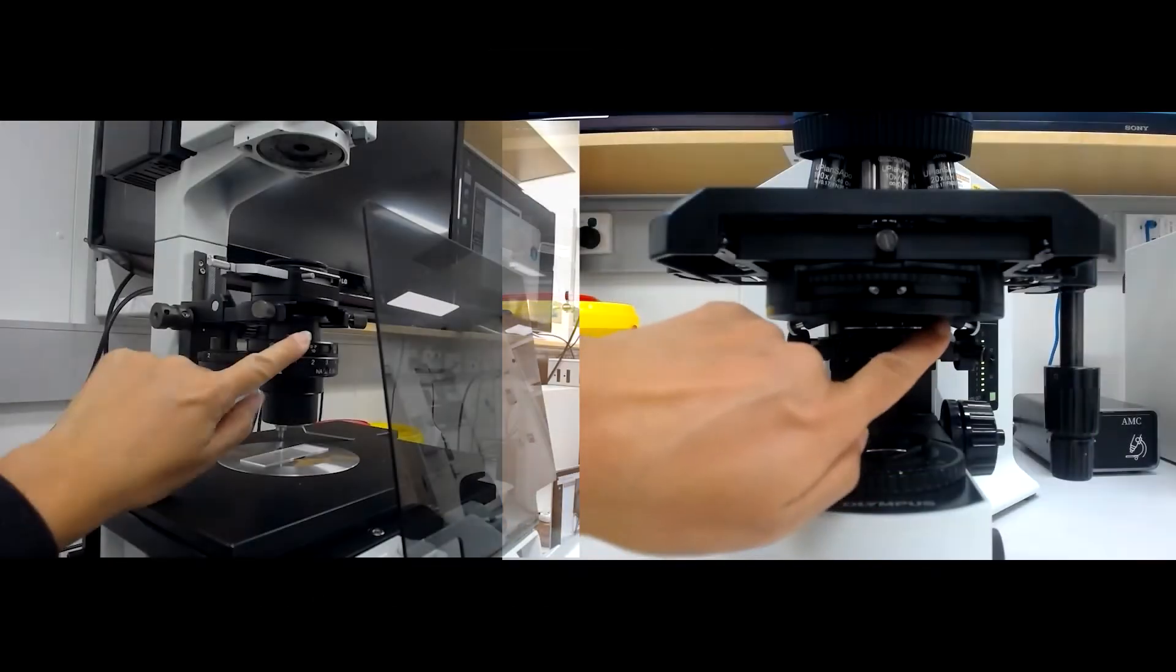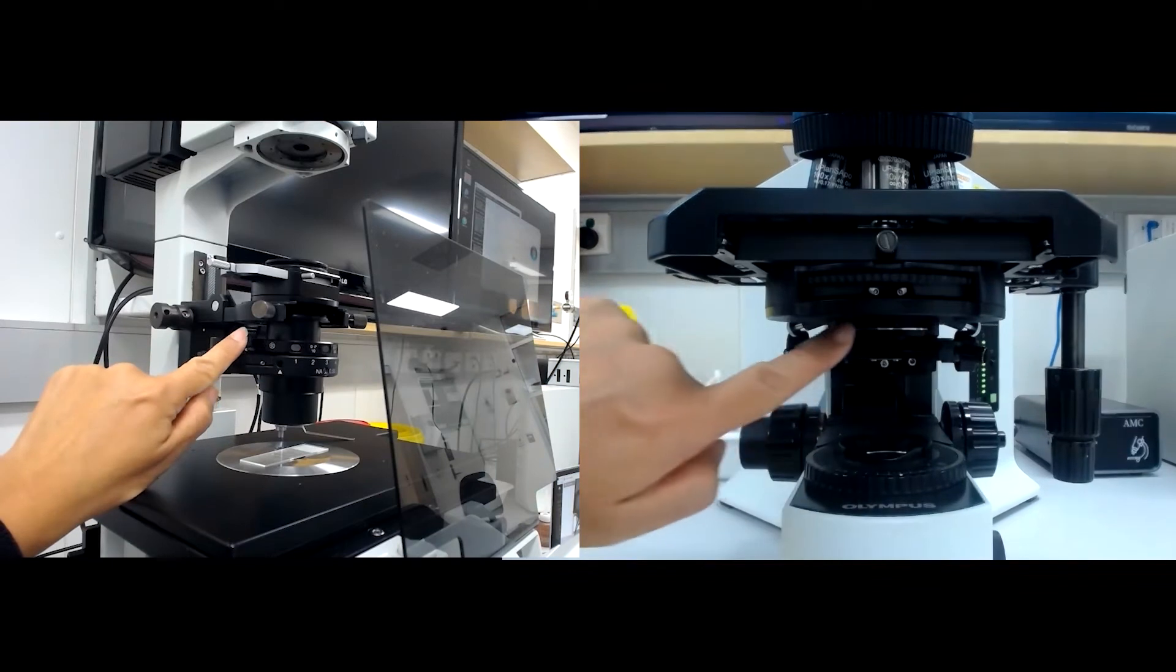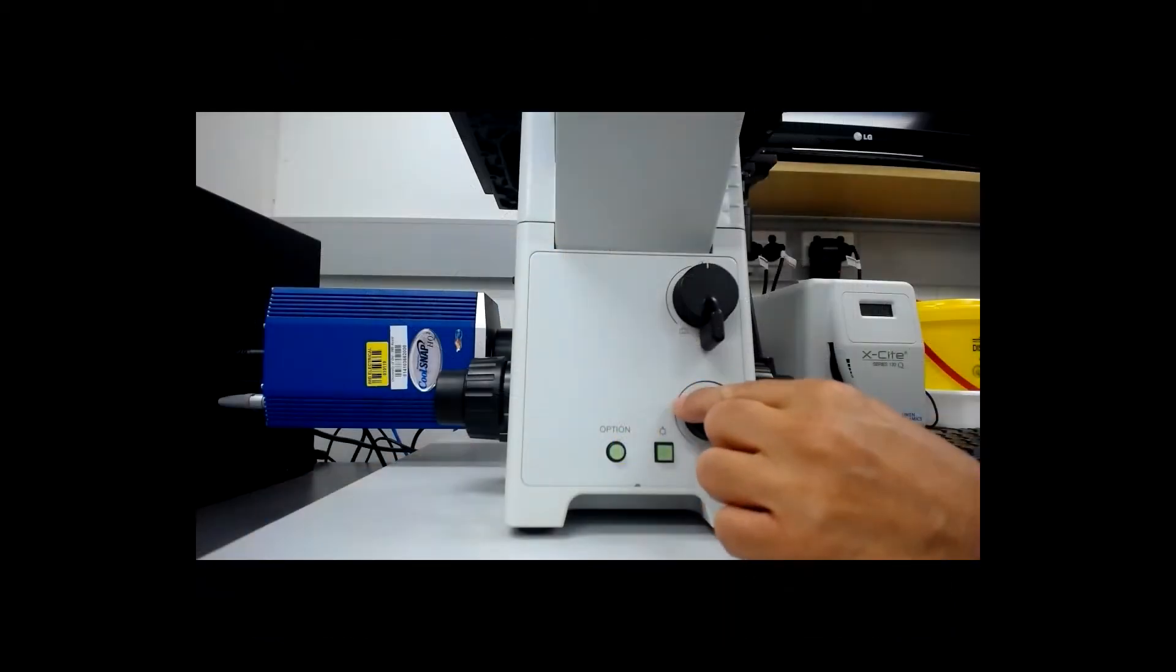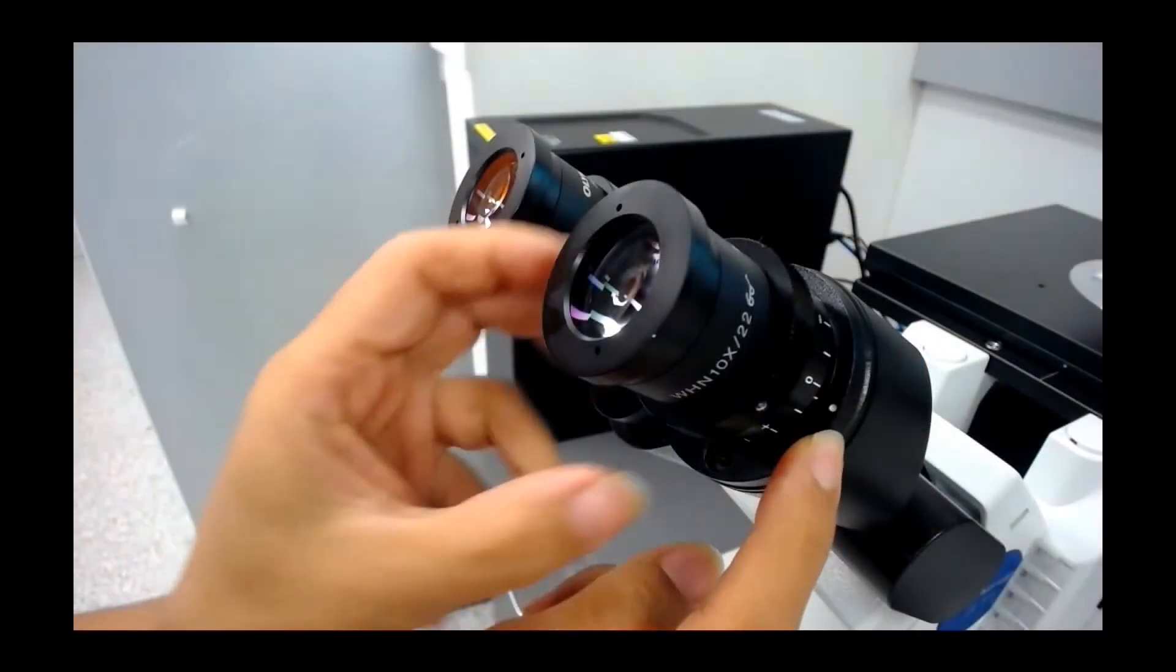First, open the aperture stop to ensure you can illuminate your sample. Now after focusing on your sample, adjust the image brightness and eyepiece diopter rings.